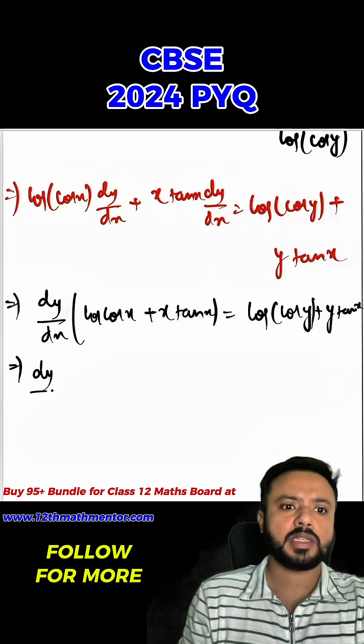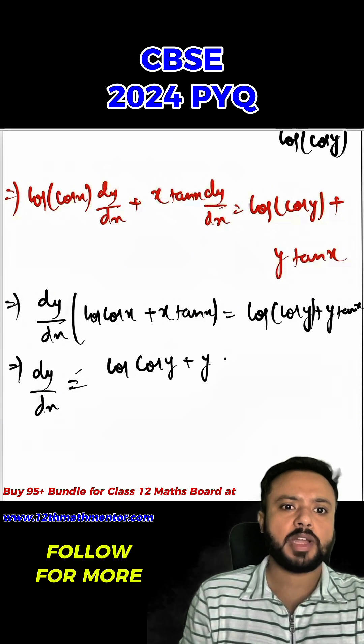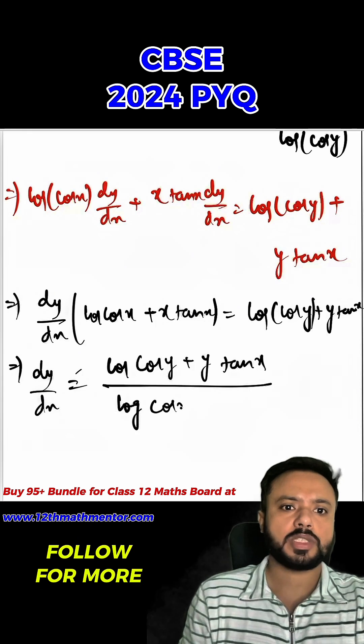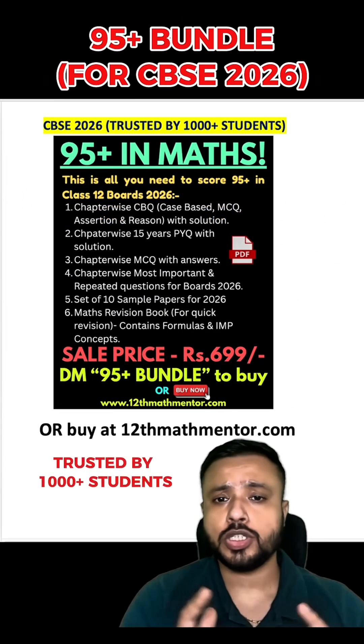Therefore, dy upon dx equals (log cos y plus y tan x) divided by (log cos x plus x tan x). This is the desired answer.